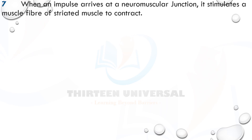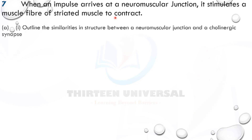The first question: remember the first rule of engagement — understand the background information. Once you understand the context, connect it to content. Ask yourself which topic this is coming from, then retrieve the information. Be careful with the command words, as they determine your response. When an impulse arrives at a neuromuscular junction, it stimulates a muscle fiber of striated muscle to contract.